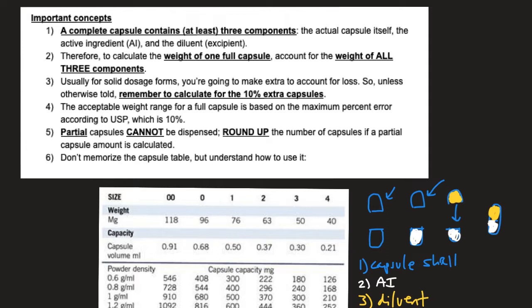For example, if in the calculation you come up with 194.4 capsules, you can't give a patient 0.4 of a capsule — you can't give them a partial capsule or one that's only partially filled with AI and some diluent with a lot of extra space. Patients would be concerned about that, and you would also lose pharmaceutical elegance. So if you ever get a decimal number for a capsule amount, round up to give them a full, whole capsule. You would give them — or calculate for — 195 capsules.